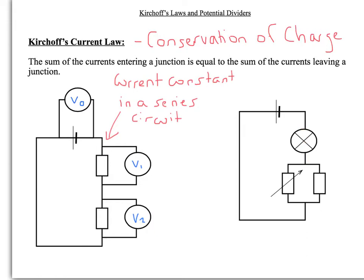If we look at this one over here, we have this point and this point here where you get a splitting and combining. Let's say that's I1, this one is I2, and this one is I3. Going into this junction here, we've got I1, and then going out we have I3 and I2. So essentially what this law suggests is that the current going in, I1, is equal to the current going out, which is I2 plus I3.